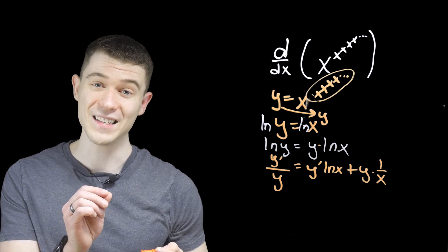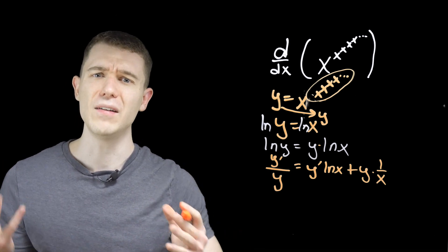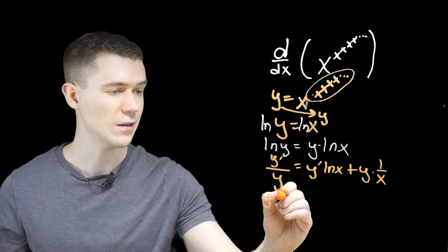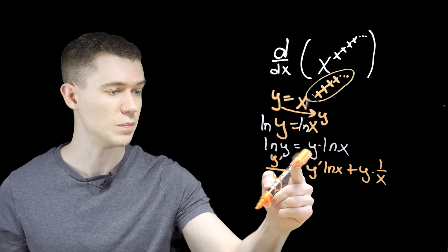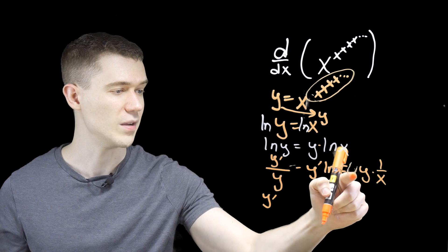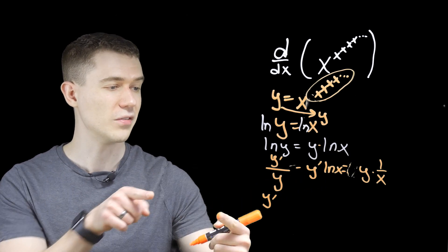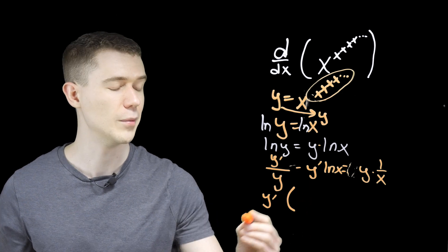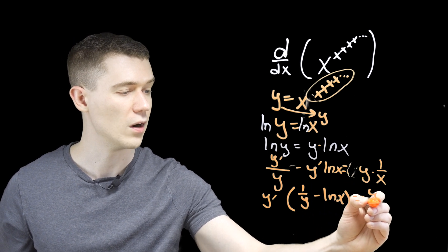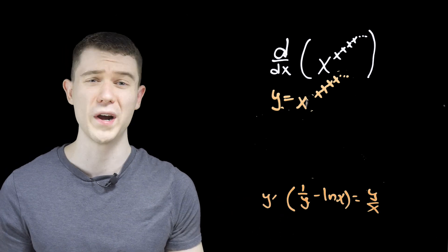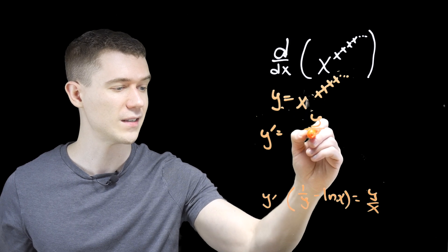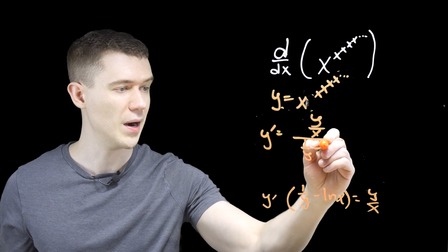Now we solve for y prime by putting all the y primes on one side and everything else on the other. Subtracting the y prime ln x term over, we can factor out y prime as the GCF, giving y prime times the quantity 1 over y minus ln x, equals y over x. To solve for y prime, we divide both sides by that factor: y prime equals y over x, all over 1 over y minus ln x.